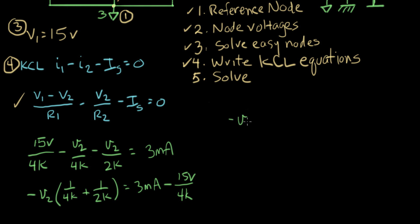And continuing over here, we have minus V2. Let's combine those two resistor terms. So it's going to be 1 plus 2 over 4k equals 3 milliamps. And 15 volts divided by 4k is 3.75 minus 3.75 milliamps. Moving on.